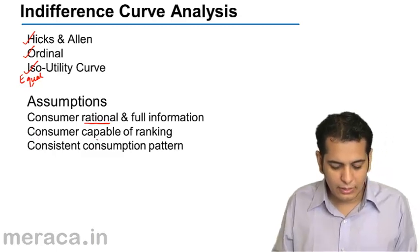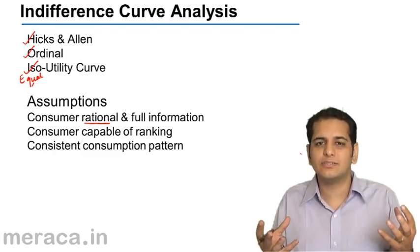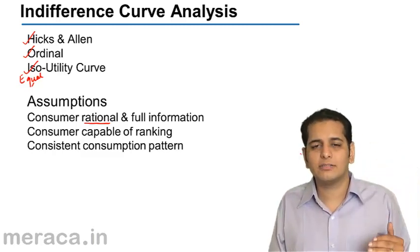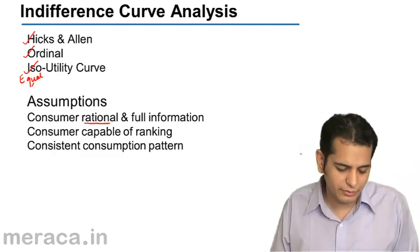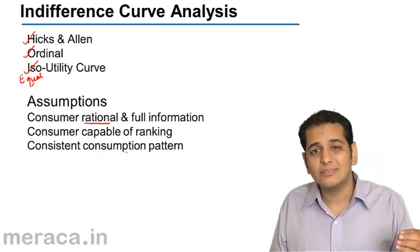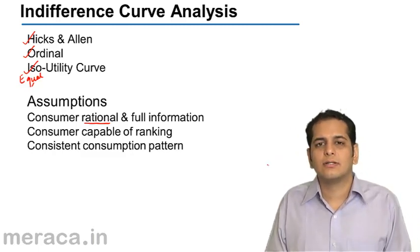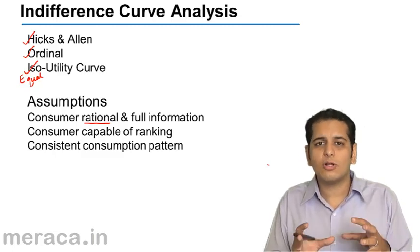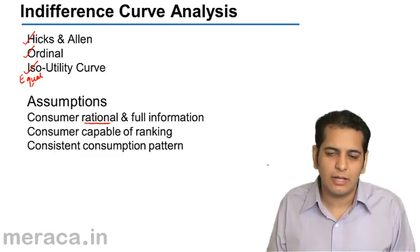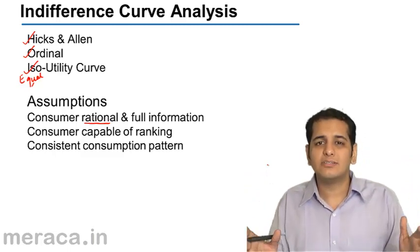The next assumption is that the consumer is capable of ranking. Since the consumer is rational, they can give a judgment in the form of ranks — ranking products in the order of utility derived. Finally, the consumer has a consistent consumption pattern. The goods should be more or less similar, there should not be many breaks in consumption, and consumption should occur during a reasonable period of time.